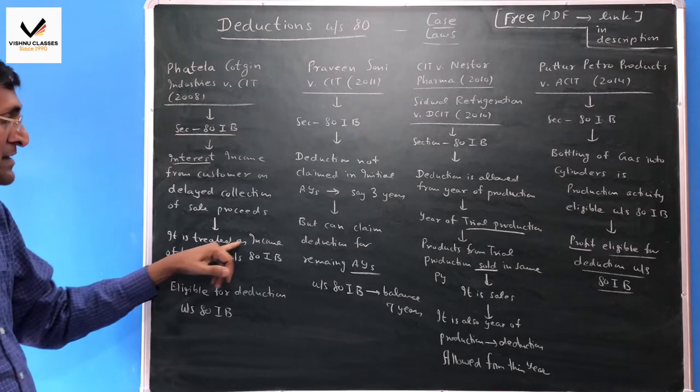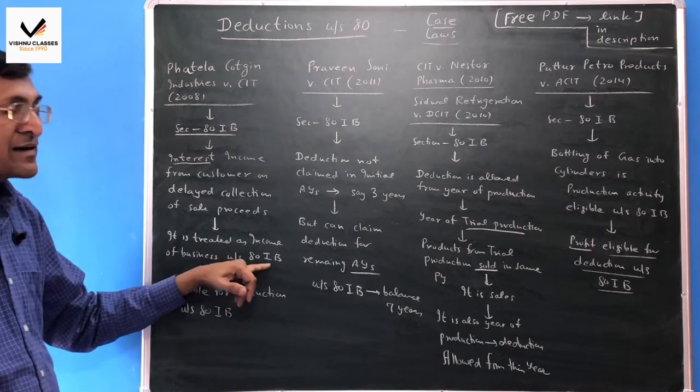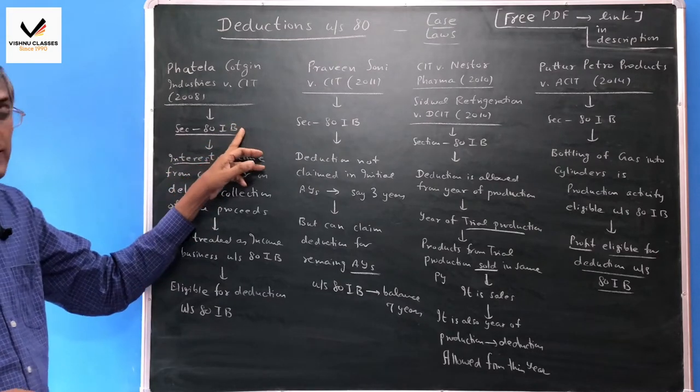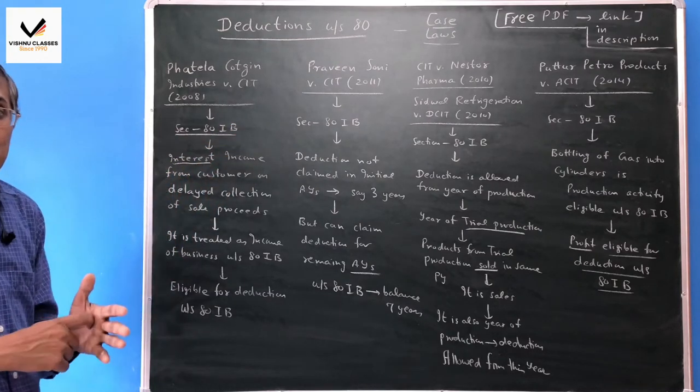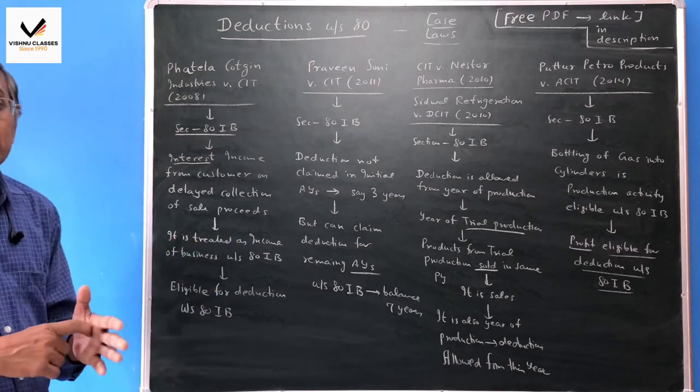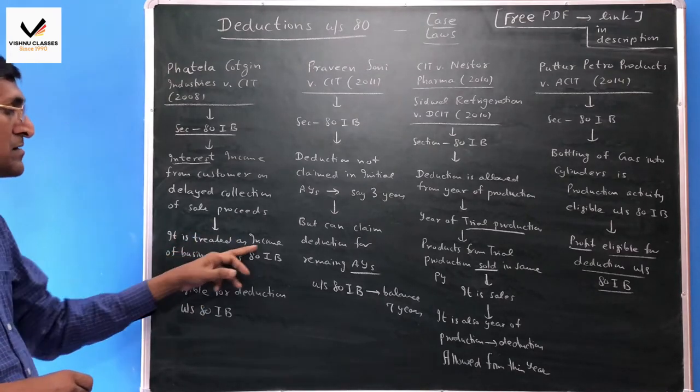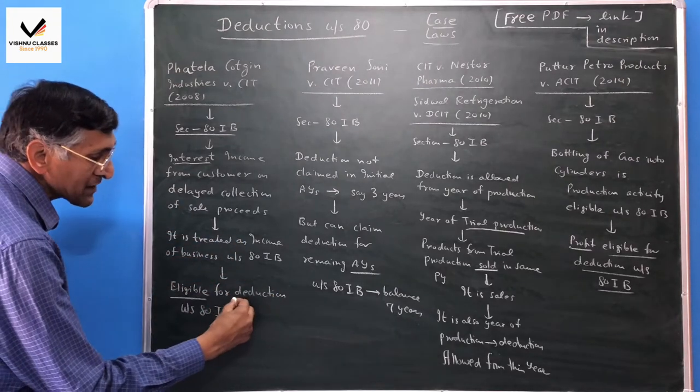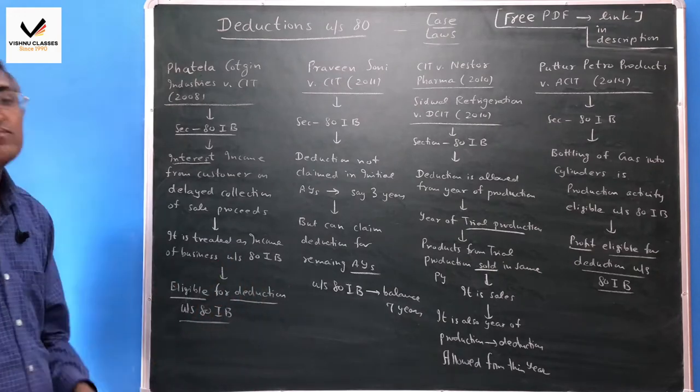This is ancillary income of business under section 80IB. The sale is from eligible business under section 80IB. If you have a delayed payment, you charge interest. This interest income is also eligible for deduction under section 80IB.